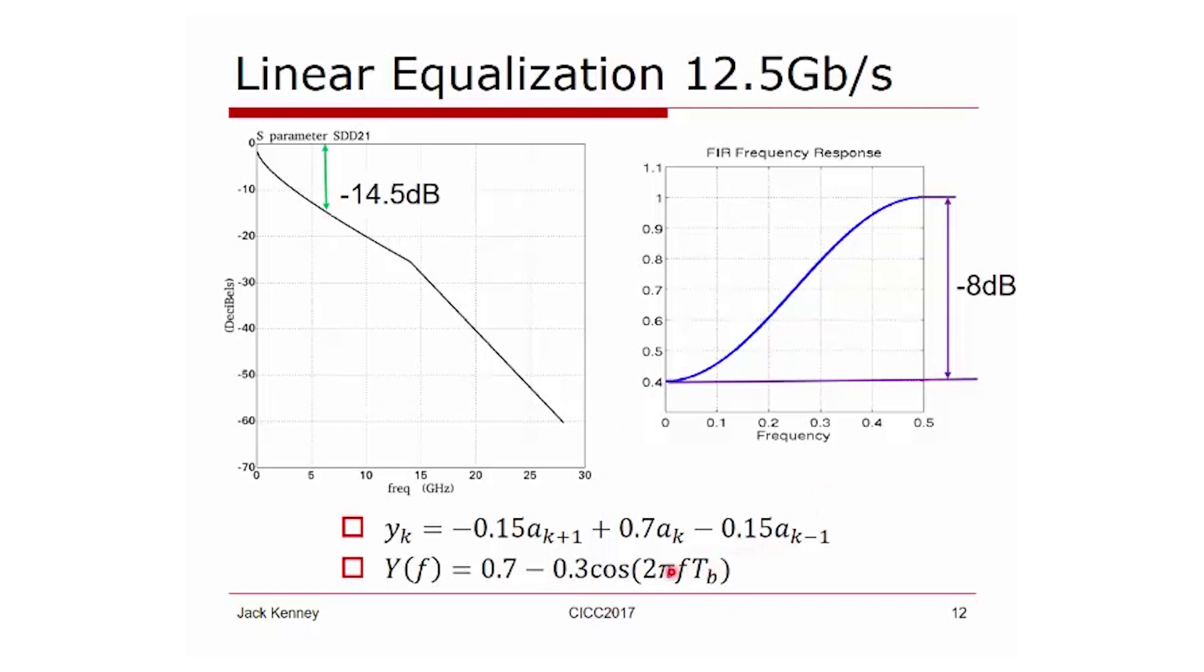If you go to Nyquist, which is half the bit period, if you substitute that into the expression, you're taking the cosine of pi. Now you have 0.7 plus 0.3, that gives you a gain of one. So you've attenuated DC relative to Nyquist by minus 8 dB.